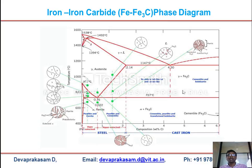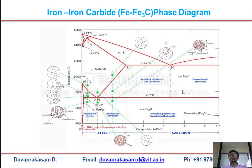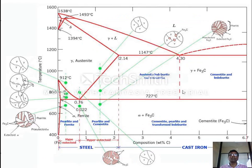Next, if you take a eutectoid austenite and cool it at different temperatures, what kind of microstructure or phases will you end up with? That is what we are going to look at — this is called the TTT diagram, or the isothermal transformation diagram. Let us look again at the big picture of the iron–iron carbide phase diagram.